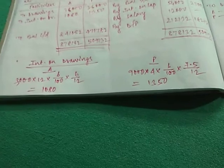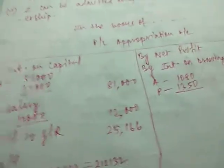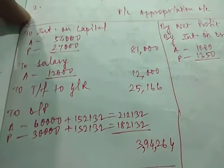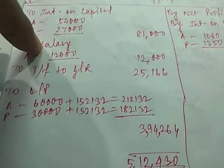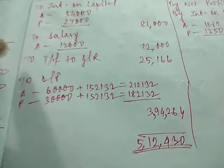So this was the interest on drawings for A and P respectively, 1080 and 1350, that we have written on the PL appropriation account credit side. On the debit side, interest on capital more or less everybody has calculated correctly. Salary 1000 per month, so 12 into 1000 will give us 12,000. Transfer to general reserve, this we will calculate.